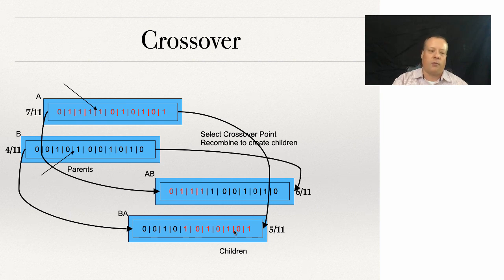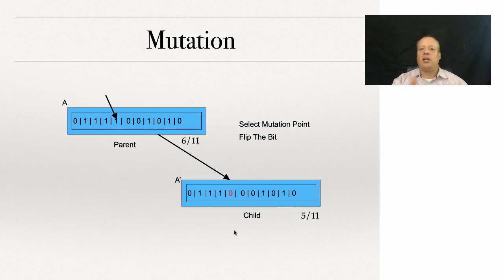Mutation just goes through and flips a bit. You just apply the mutation: you go through and you flip a bit, and when you bring the individual over you have this new bit. This one went from six elevens to five elevens—in this case it's a deleterious mutation is what we call this, but it's still a mutation that's applied.